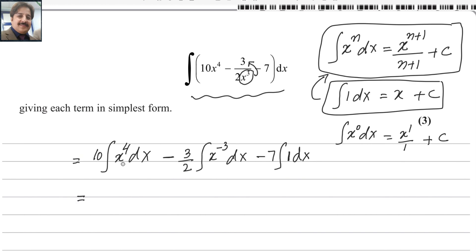Now apply the power rule for this function. 10 keep outside. It will be x to the power 4 plus 1 is 5. We are applying this formula. Divide by the same power. Then minus 3 over 2, keep outside of the bracket. Then increase the power by 1. It will be minus 2 now. And then divide by the same power.